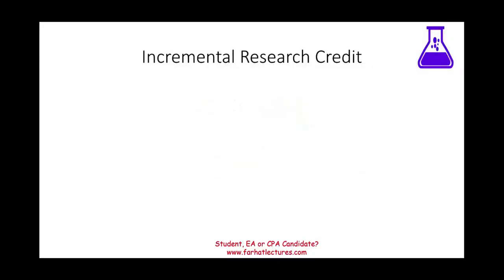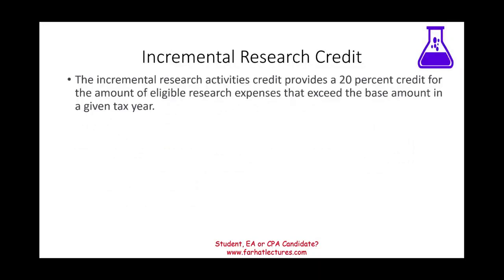The incremental research credit provides 20% for the amount of eligible research expenses. However, the 20% applies to the amount that exceeds what's called the base amount. The base amount is given, or the company will determine it — you don't have to calculate the base amount, it will be provided.